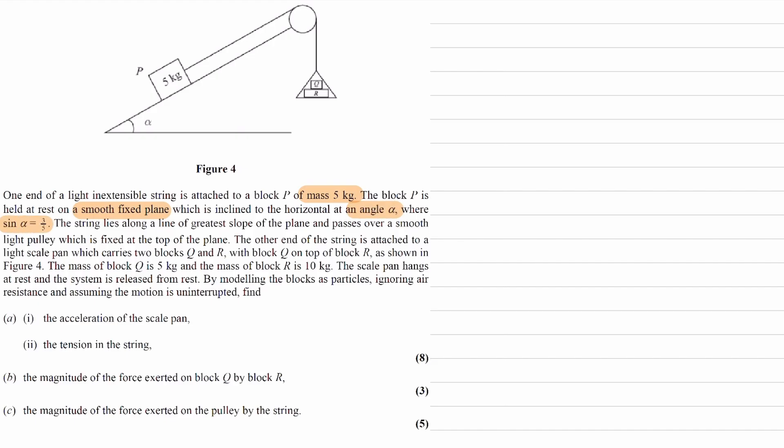The string lies along a line of greatest slope of the plane and passes over a smooth light pulley which is fixed at the top of the plane. The other end of the string is attached to a light scale pan, so the pan itself has no mass, which carries two blocks Q and R with Q on top of block R, as shown in figure 4.